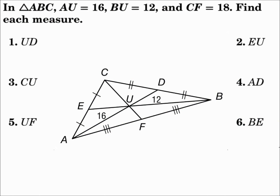In triangle ABC, the measure of segment AU equals 16, the measure of segment BU equals 12, and the measure of segment CF equals 18. Find each measure. Since all of these segments go from the vertex to the midpoint of the opposite side, they are the medians, and where they intersect is the centroid. Since the centroid cuts each median into ratios two to one, remembering the longer part is on the vertex side, we can find the remaining measures.